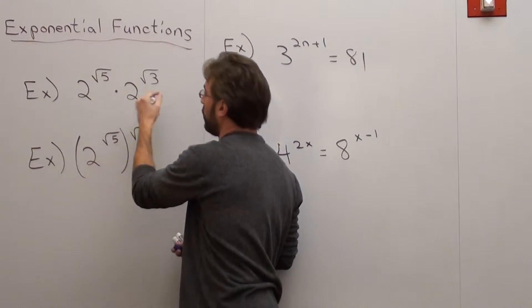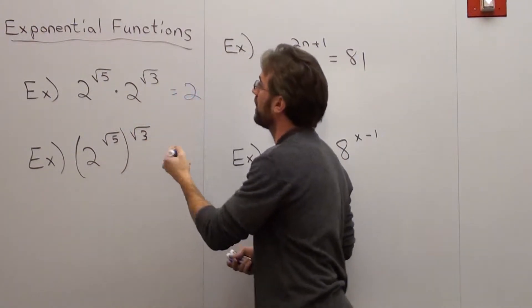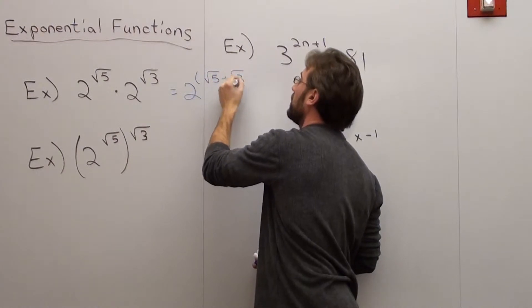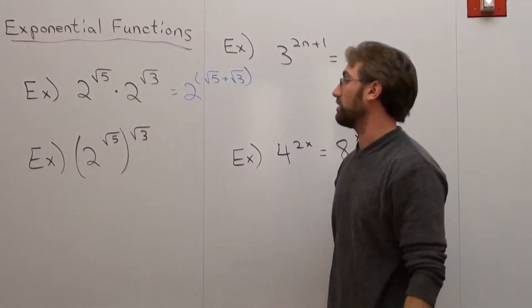So if you want to simplify this with one base, it would be 2 to the power of square root 5 plus square root 3. And that's pretty much all you can do.